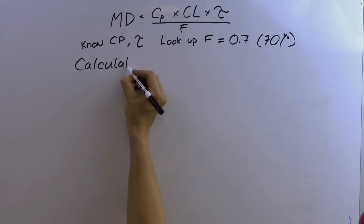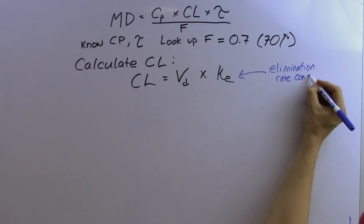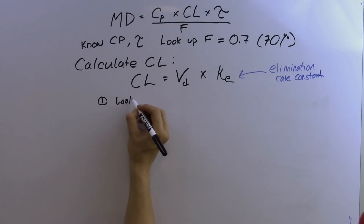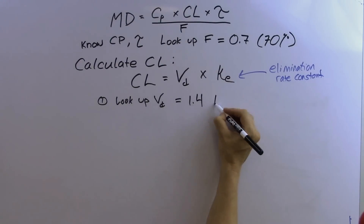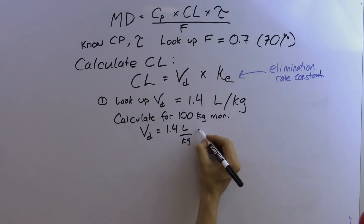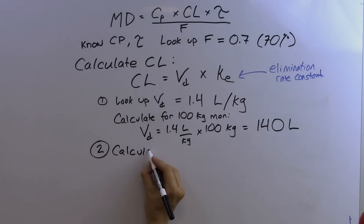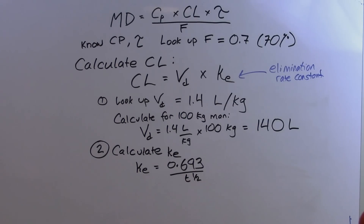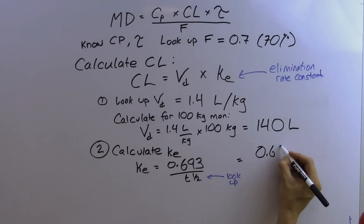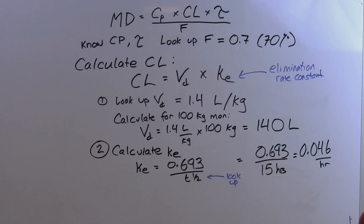We can use this equation to calculate clearance, where clearance equals the volume of distribution times the elimination rate constant. The volume of distribution for carbamazepine is 1.4 liters per kilogram, so for our 100 kilogram man that's 140 liters. The elimination rate constant is defined as 0.693 divided by the half-life. Looking up the half-life for carbamazepine and plugging in, we get 0.046 per hour. Now we have everything needed to calculate clearance.